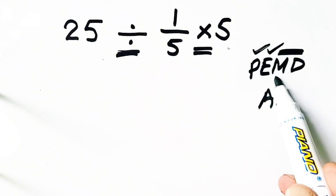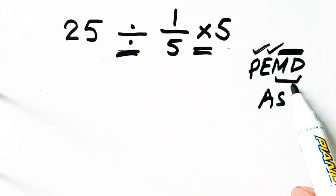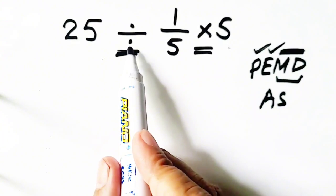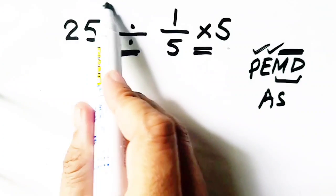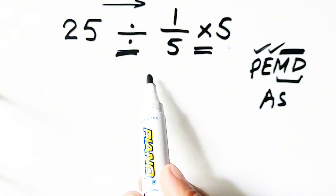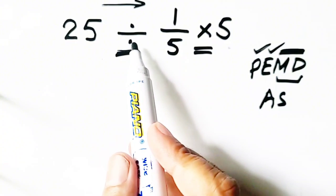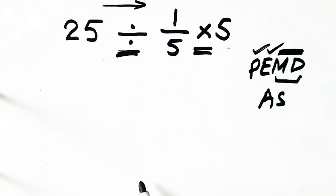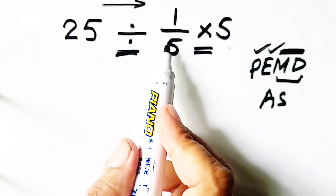Both multiplication and division have the same priority, but we should solve division first because we have to move from left to right, and the operation which is at left will be solved first. So 25 divided by 1/5...